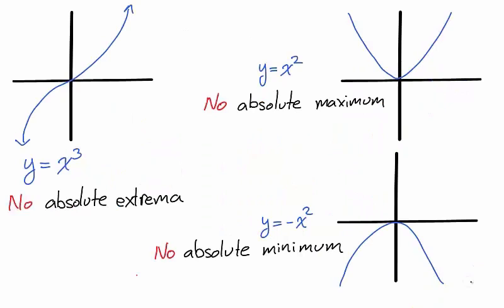A function doesn't necessarily have an absolute maximum or minimum. Take, for instance, y = x³. A function may have an absolute minimum, but no absolute maximum. Take, for instance, y = x². A function may have an absolute maximum, but no absolute minimum. Take, for instance, y = -x².